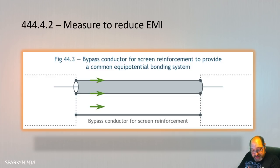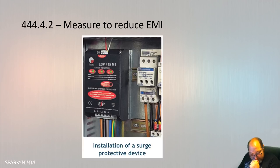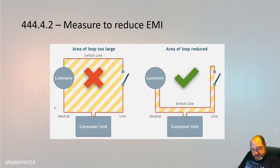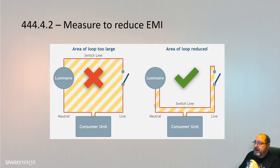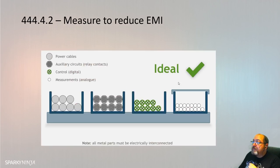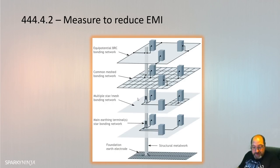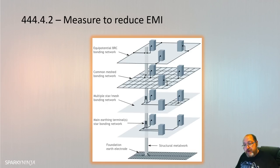Further measures include: the use of a surge protective device (SPD); installation of power cables close together to minimize cable loop areas; separation of power and signal cables into their own wiring systems; and the installation of an equipotential bonding network. The equipotential bonding network is covered in Annex A444.